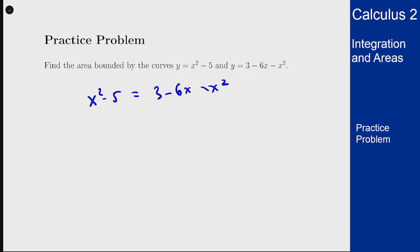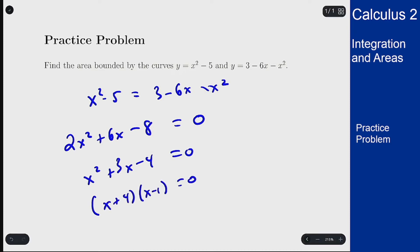Move everything to the left, multiply everything by 2, and this factors as x plus 4 times x minus 1. The intersection points are x is minus 4 and x is plus 1.